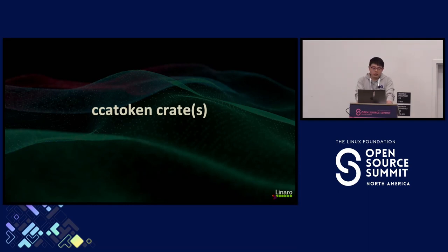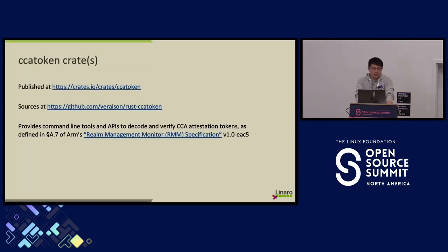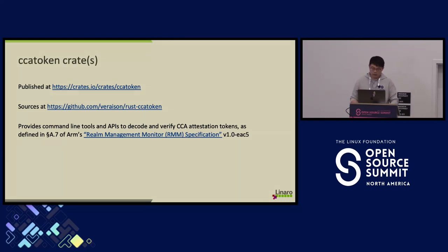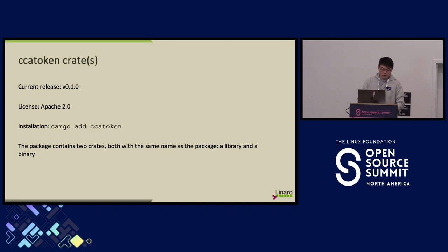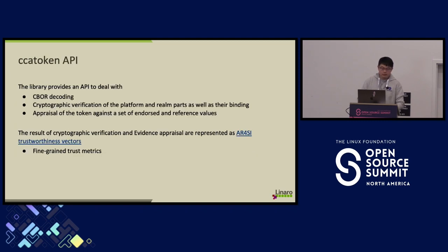Regarding remote attestation: we have the Rust 'cca-token' crate, already published at version 0.1. It can be treated as a CCA token primitive — similar to Intel's DCAP library — for doing remote attestation token verification and appraisal locally for ARM CCA. We also provide command-line tools and an API. The concepts are defined in the RMM spec. The library provides API for CBOR decoding (as defined in the RMM spec), cryptographic verification of the platform and realm parts, their binding check, and appraisal against reference values.